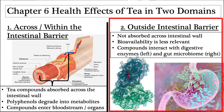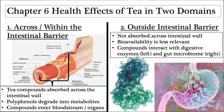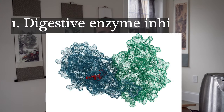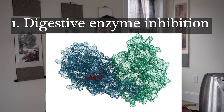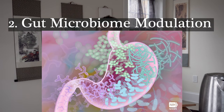Now let's take things out of the brain and back outside of the intestinal barrier. Outside of the intestinal barrier, we have two main important ways that bioactive molecules in tea can impact health: one is called digestive enzyme inhibition, and the other is by modulating and changing the gut microbiome. Both of those are extremely important.